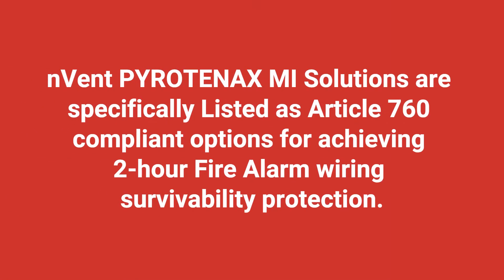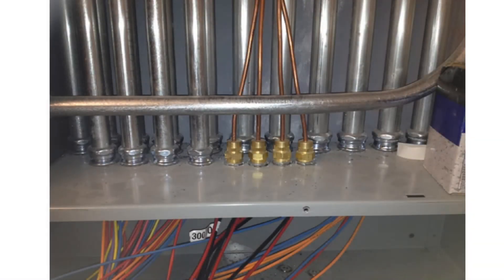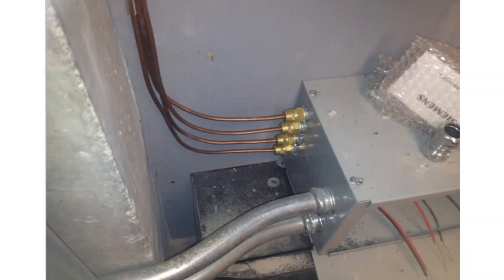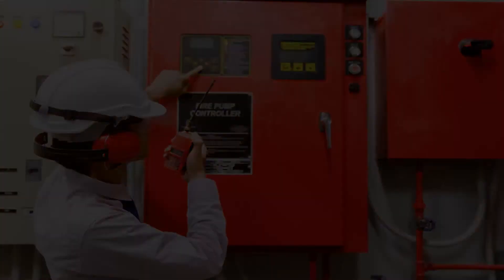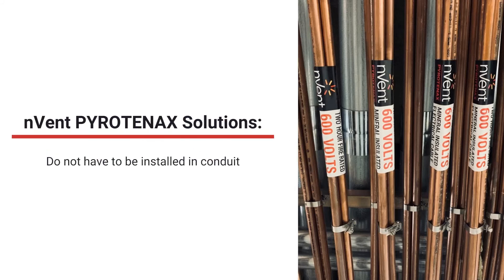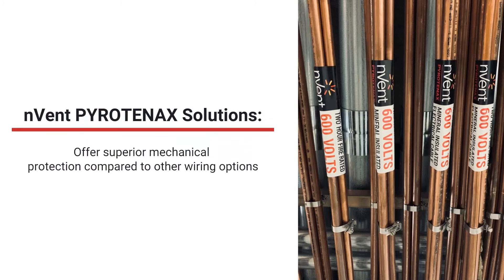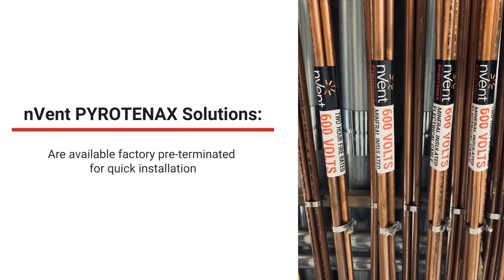Pyrotenex MI solutions are specifically listed as Article 760 compliant options for achieving two-hour fire alarm wiring survivability protection. Many people in the industry know that Pyrotenex MI cables come in many sizes and configurations of power cable. In addition, they are also available in twisted pair shielded and non-shielded cables specifically engineered for fire alarm systems. Pyrotenex MI solutions have no vertical limitations, do not have to be installed in conduit, offer superior mechanical protection, have approved splice options, require fewer supports, and are available factory pre-terminated for quick installation.